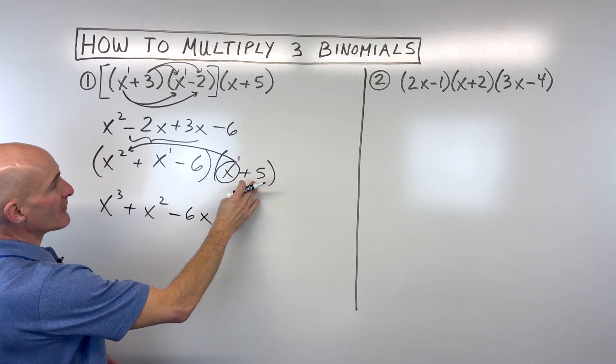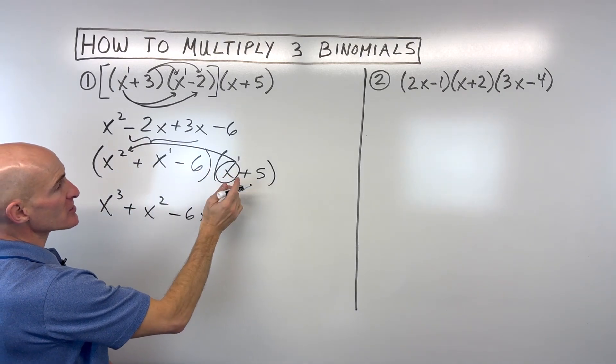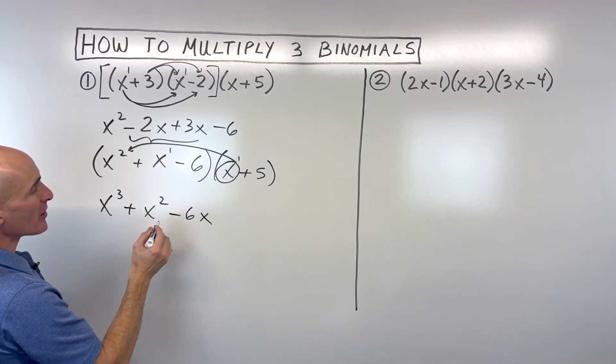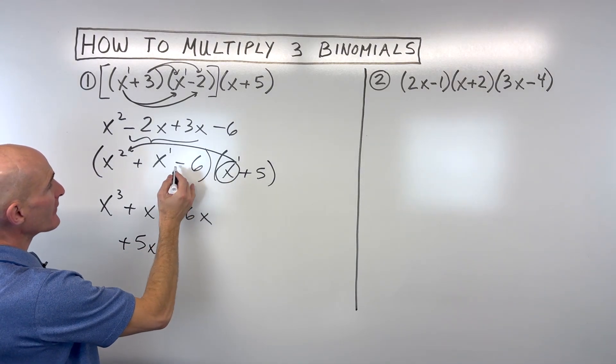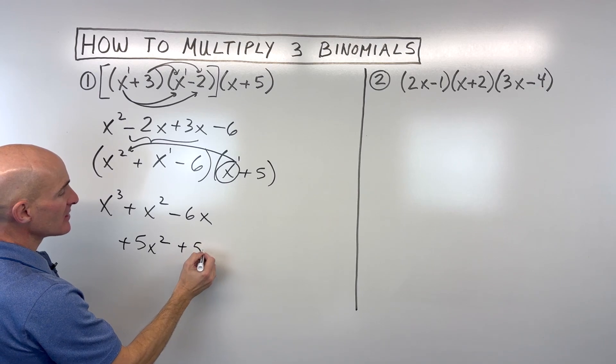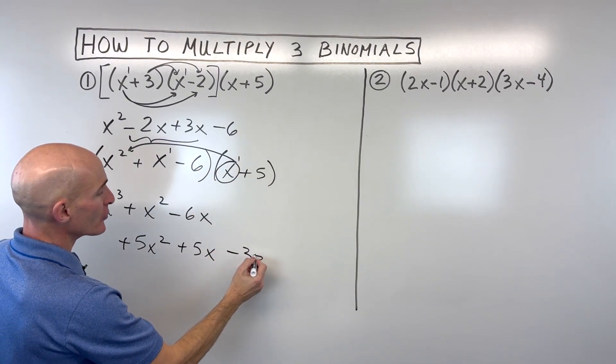Now we're going to take the five and distribute it to all three of these terms. So if I take 5 times x squared, I get 5x squared. 5 times x, I get 5x, and 5 times negative 6, I get negative 30.